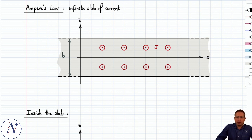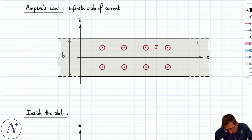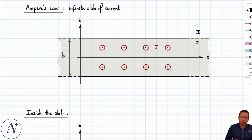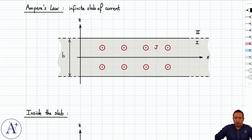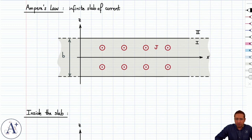We have to be careful: 'everywhere' means inside the slab, which is region 1, and outside the slab, which is region 2. This is very similar to what we did with Gauss's law. We'll start inside and then move to the outside, doing it in two steps to find the magnetic field in each region.